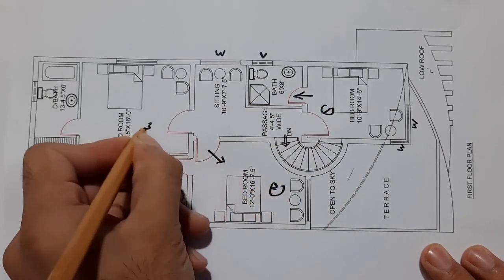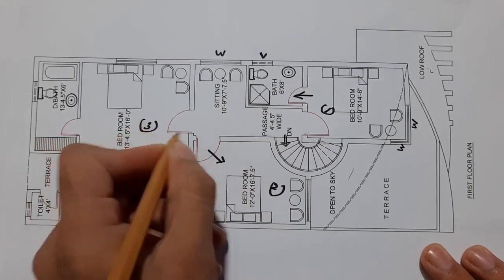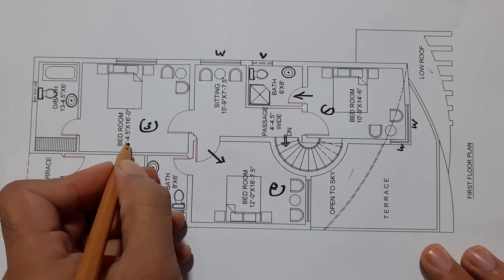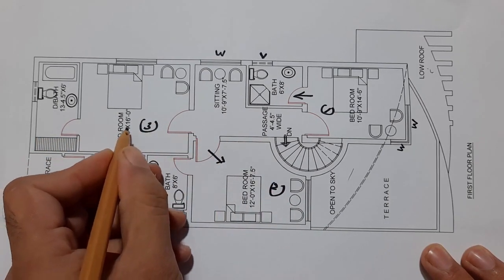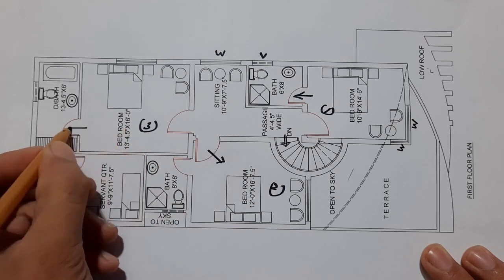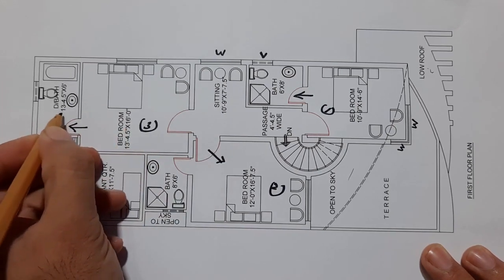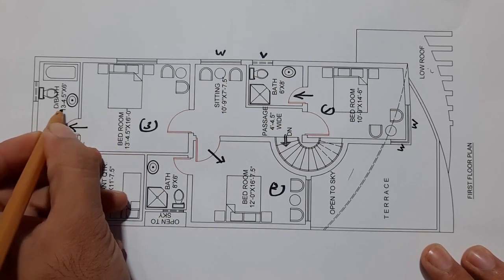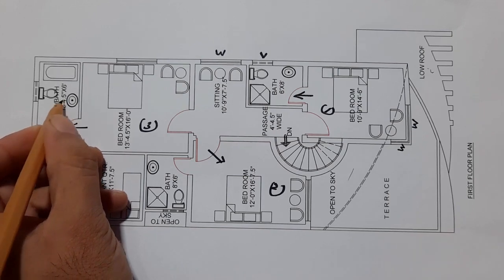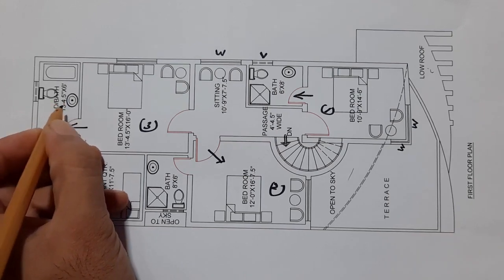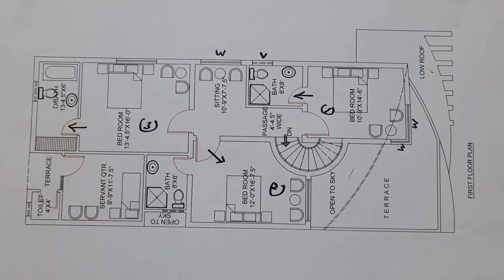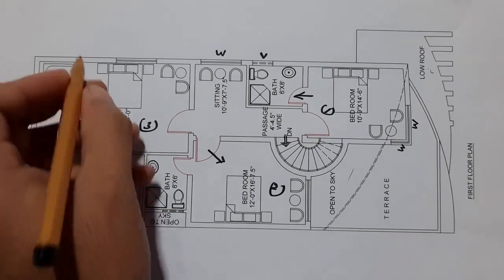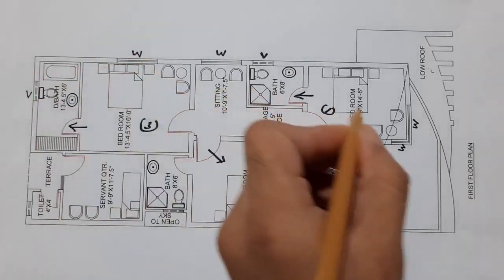The size of the third bedroom is 13 feet 4.5 inches by 16 feet. The bath for this bedroom is 13 feet 4.5 inches by 6 feet, with ventilation. You can also see the windows clearly.